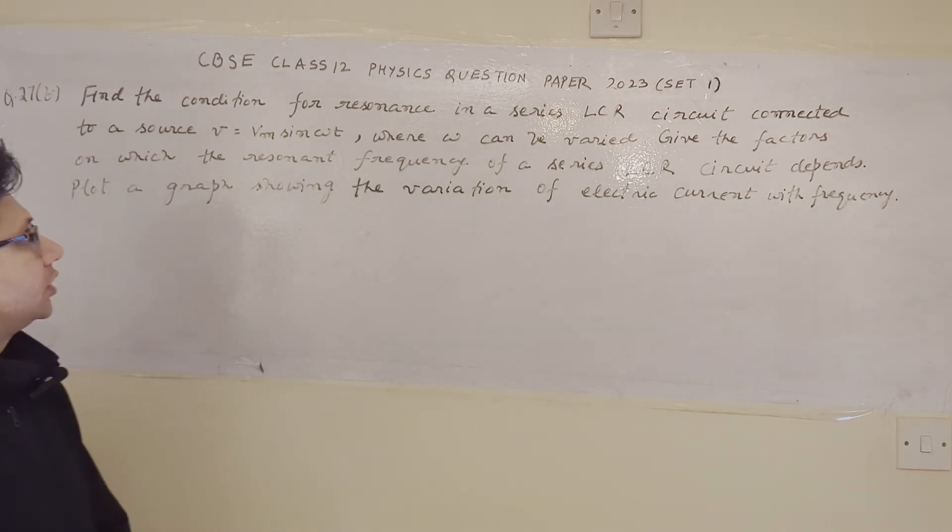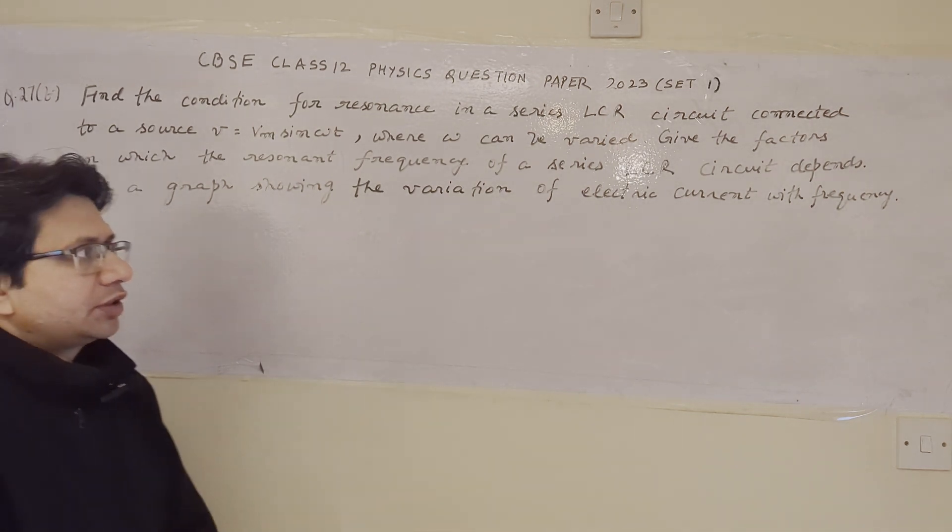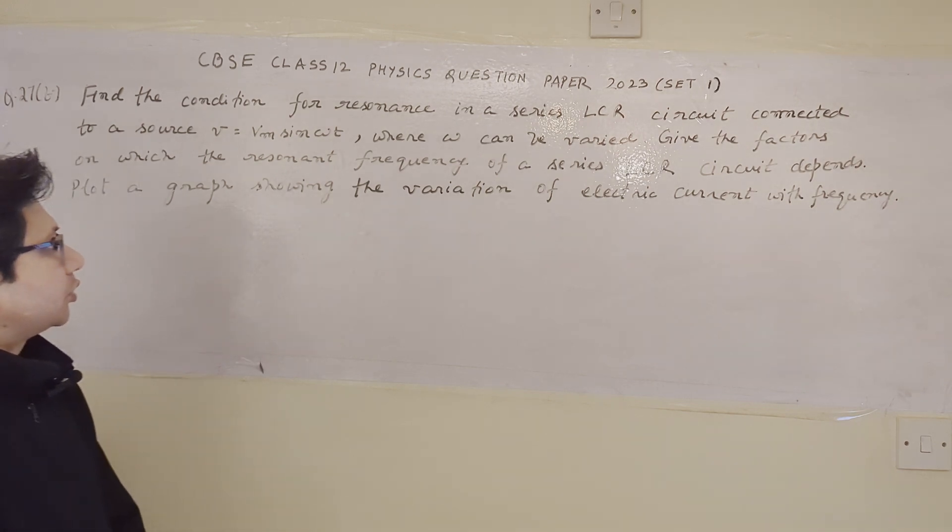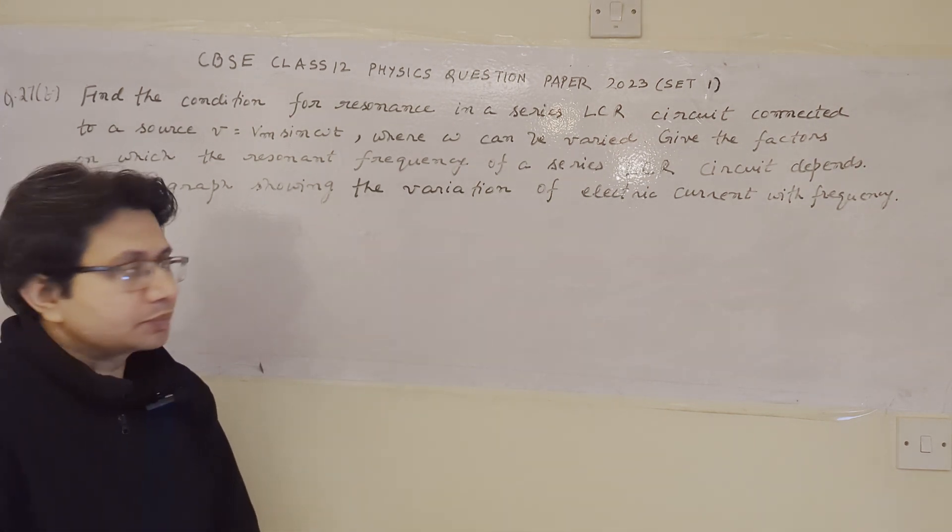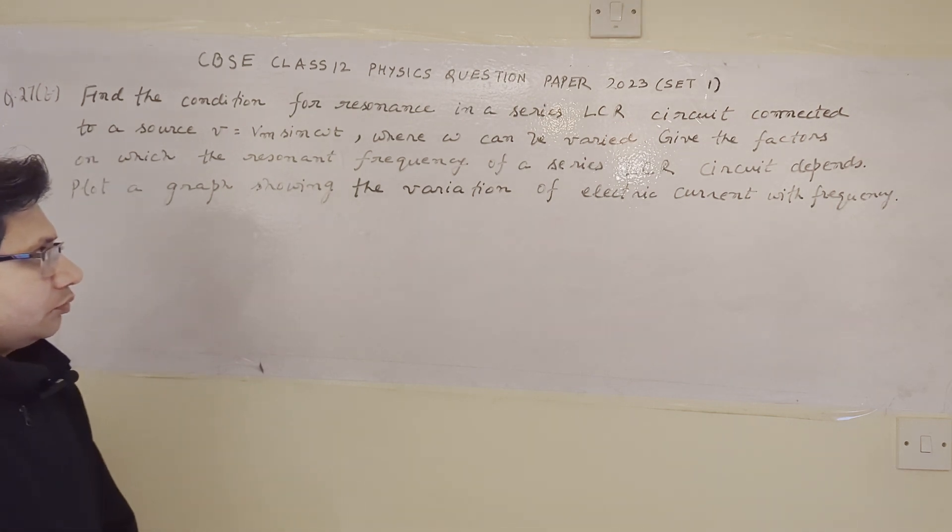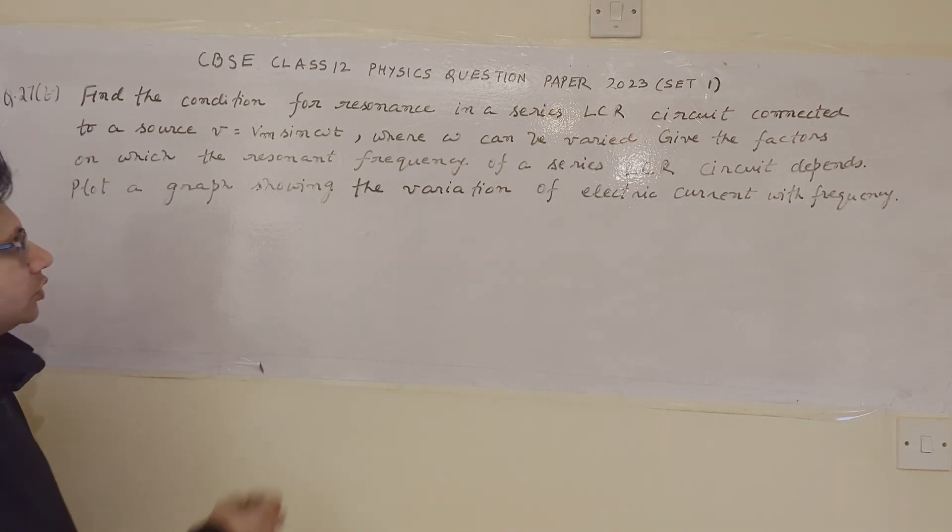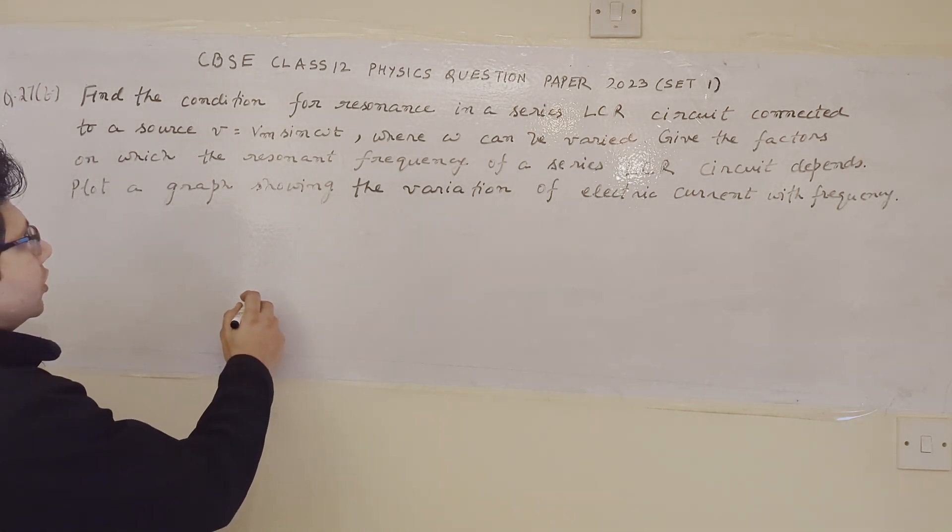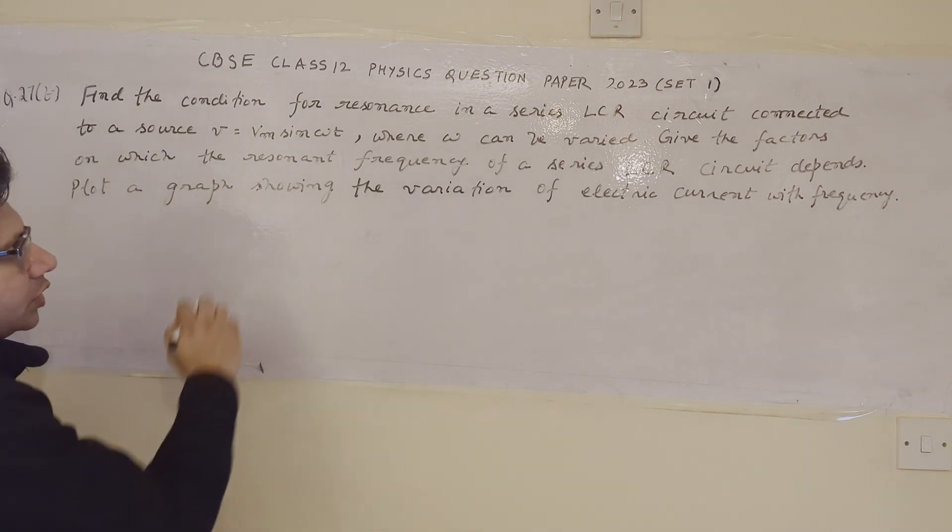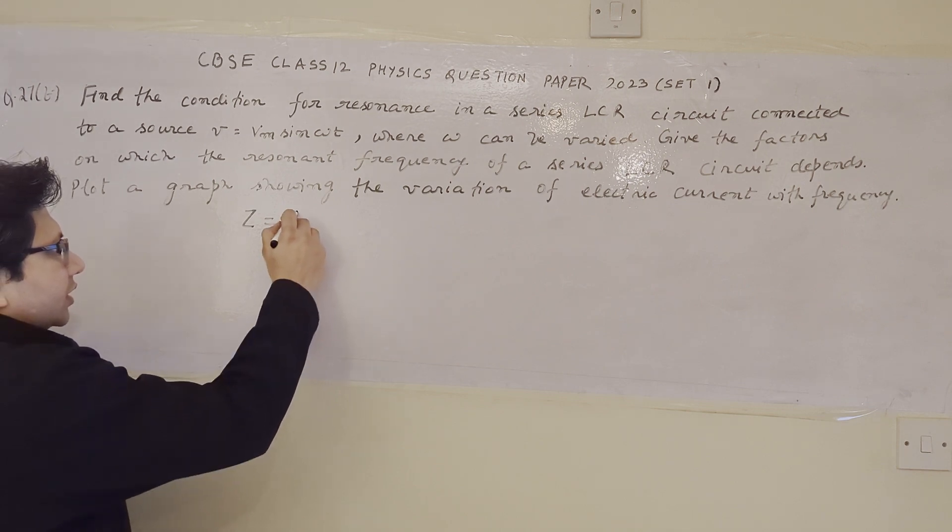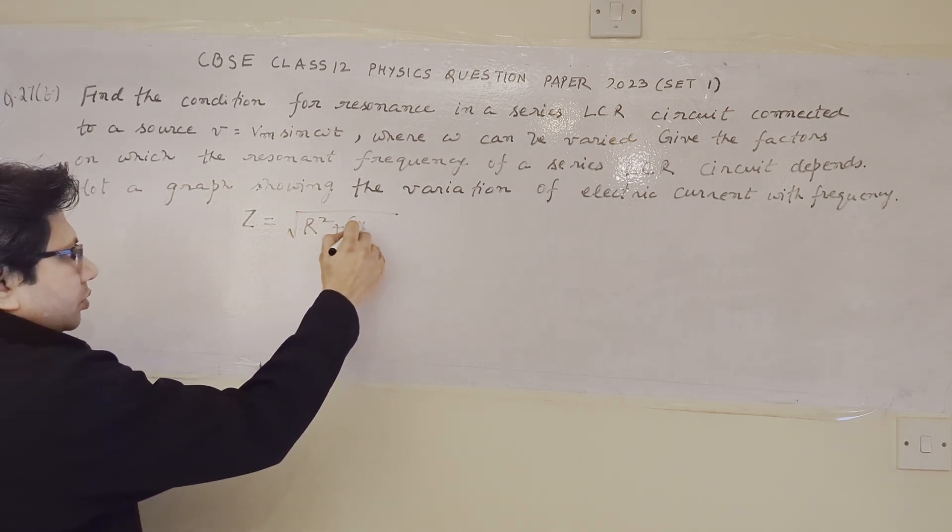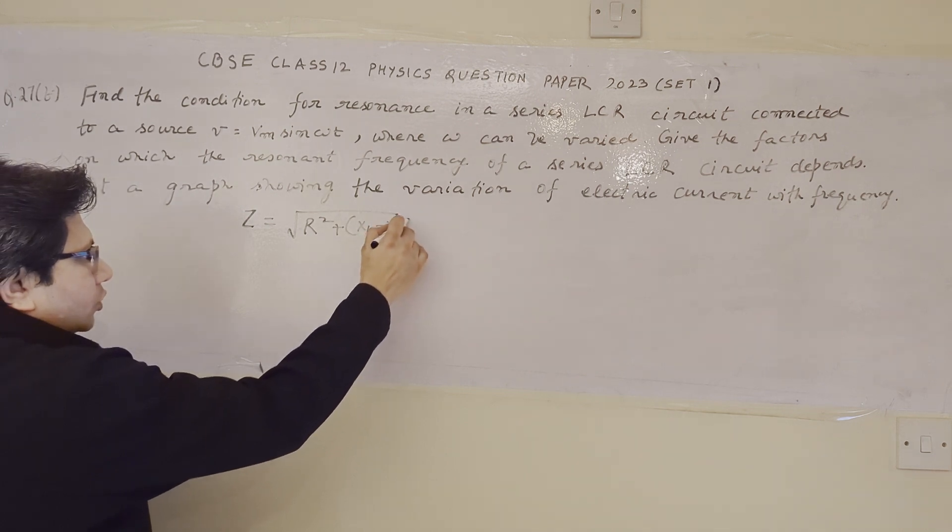So, we have to find out the condition for the resonance. In this particular problem, first we have to find out the condition for the resonance. We know that the impedance Z in a series LCR circuit is given by Z equals to square root R square plus X of L minus X of C whole square.